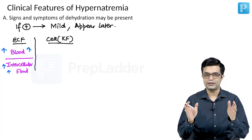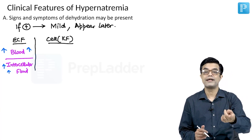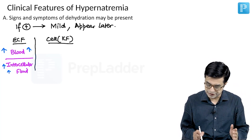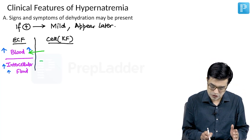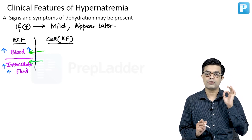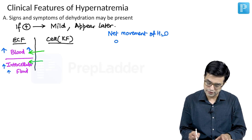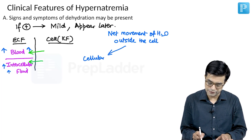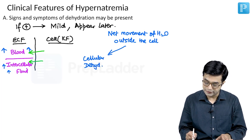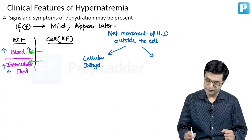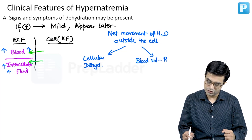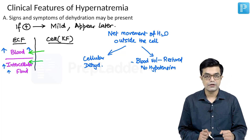Sodium is normally more outside compared to inside, but there is a delicate balance. If this balance is disturbed and hypernatremia happens — that is, more sodium outside the cell — there will be a net movement of water outside the cell into the ECF. This leads to two things: first, cellular dehydration; and second, because water moves outside the cell, the blood volume will be restored. So there will be no hypotension despite dehydration, and they will come to attention later.